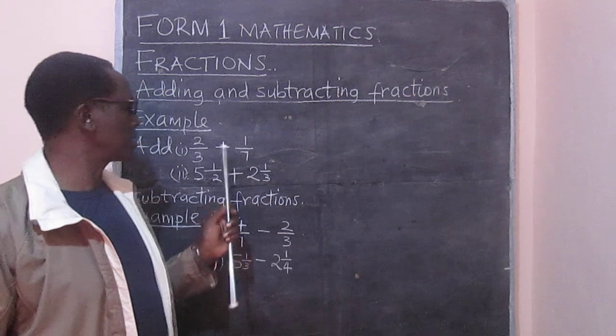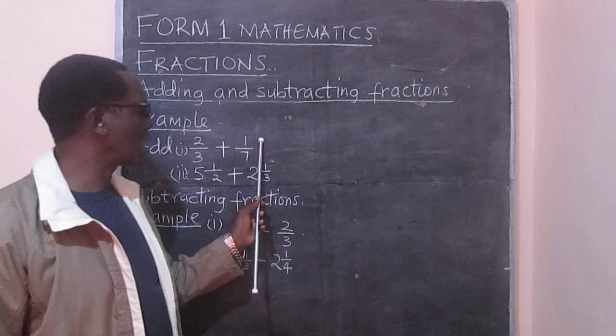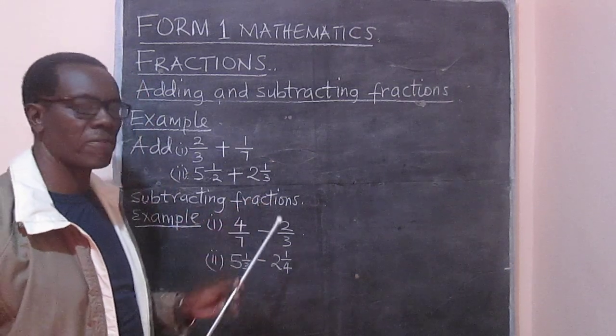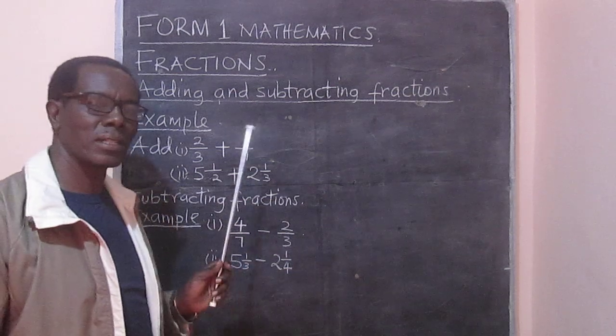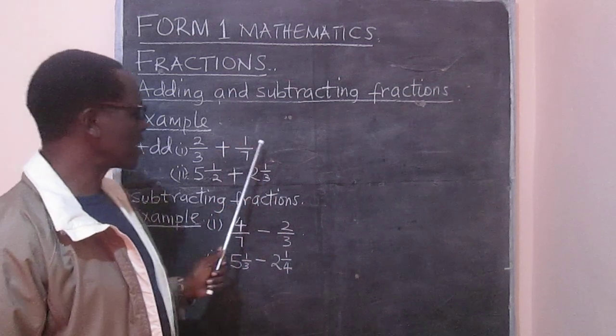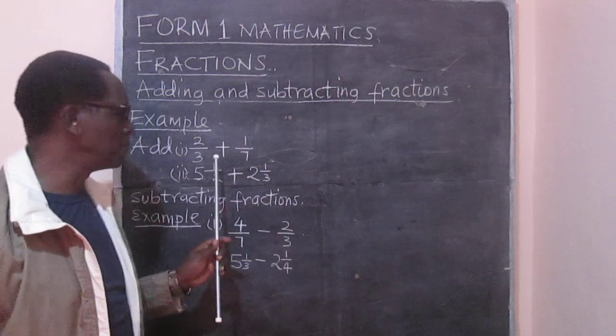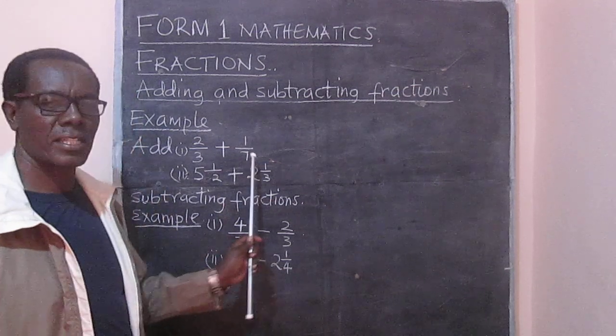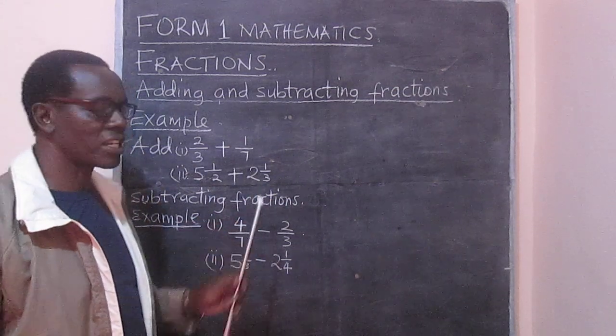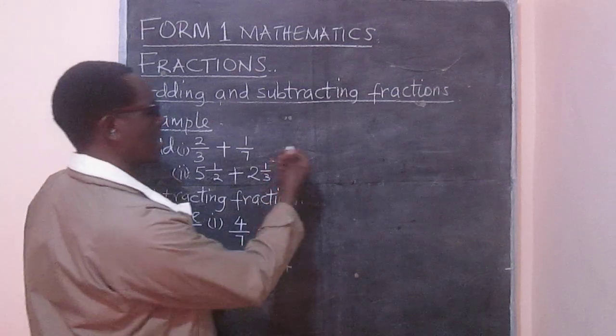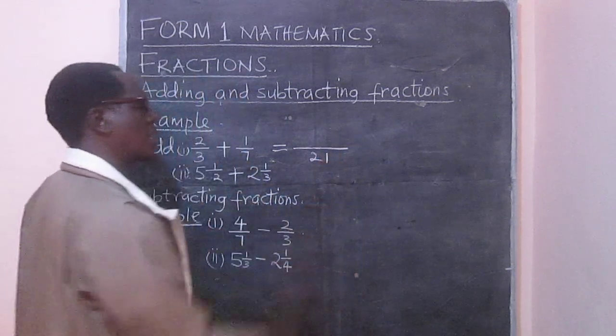So let's go straight to the examples we have here. The first one is 2/3 added to 1/7. You remember the idea of the lowest common multiple, or the LCM. So in this example, we need to remember how to get the LCM of 3 and 7. This is going to be 21.